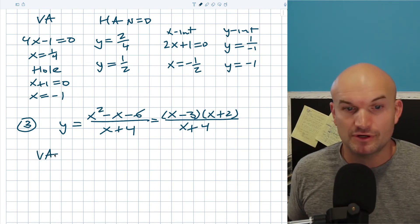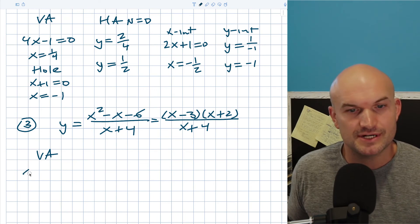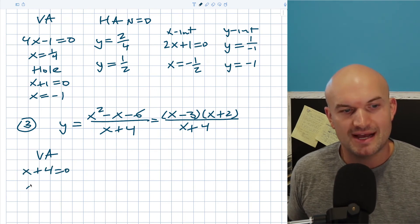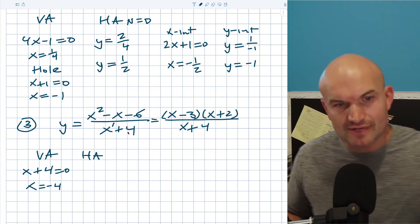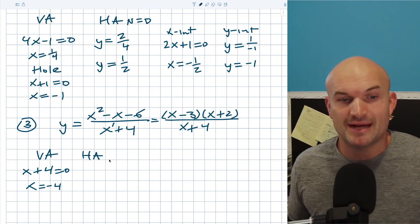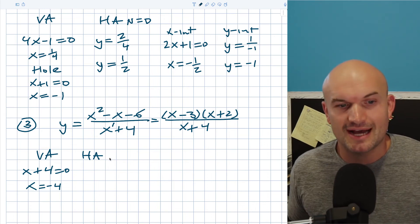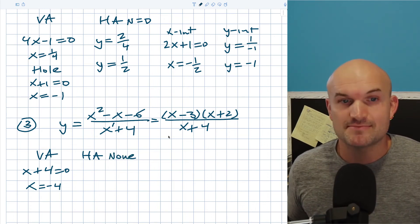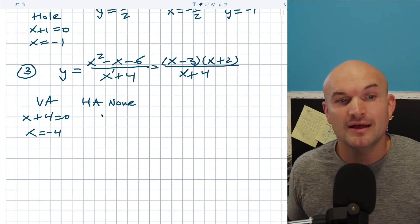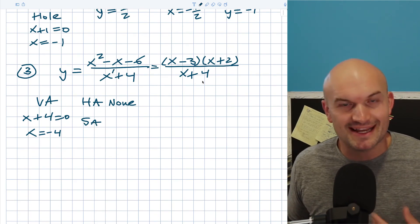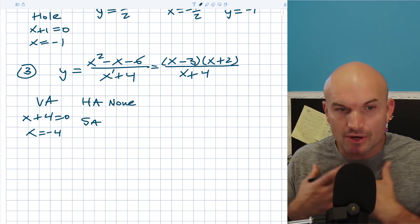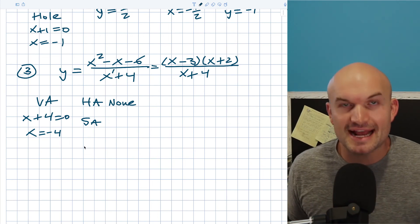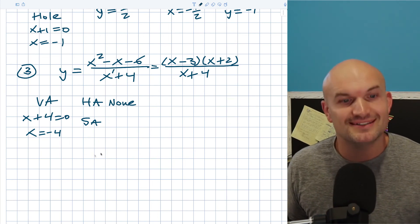For the vertical asymptote, set x plus 4 equal to 0, giving x equals negative 4. For the horizontal asymptote: the degree of the numerator (2) is larger than the degree of the denominator (1), so there is no horizontal asymptote. Instead, we have the opportunity for a slant asymptote. Since there's no hole, we do have a slant asymptote. To find it, we perform polynomial long division.